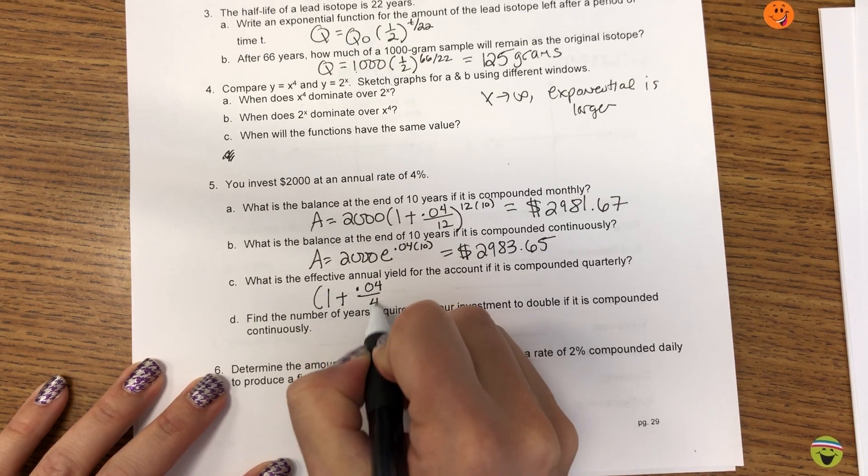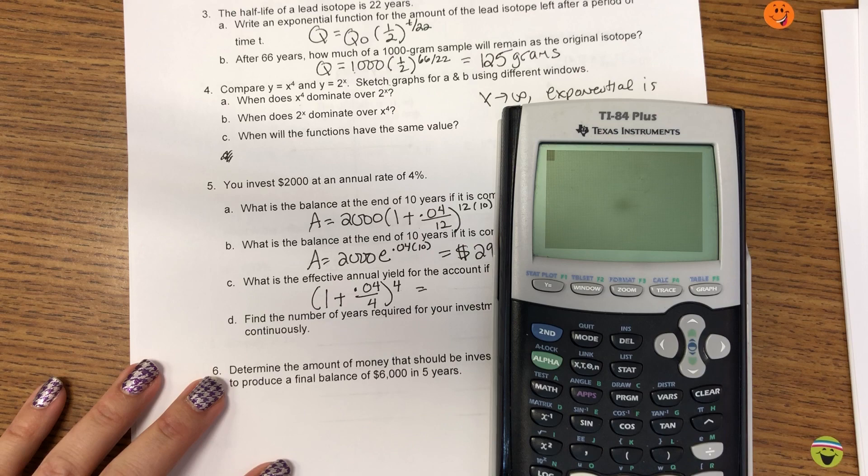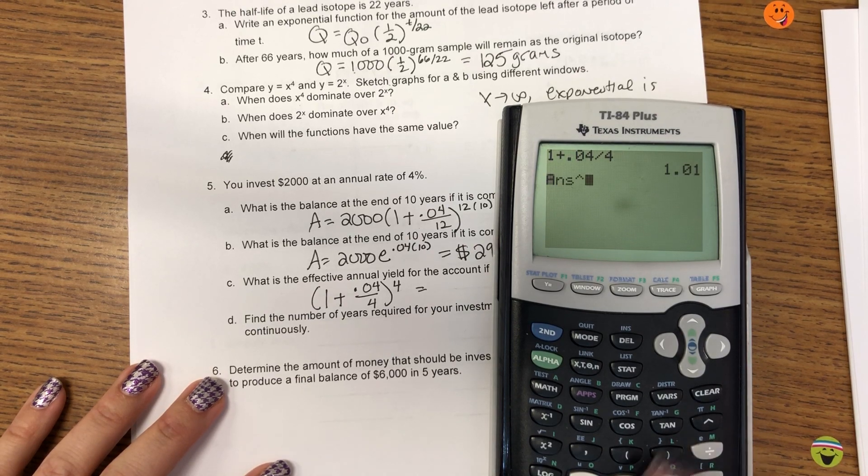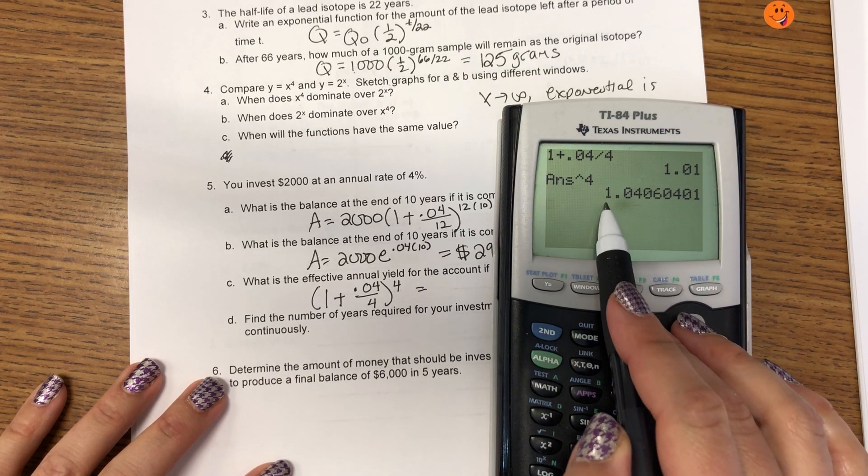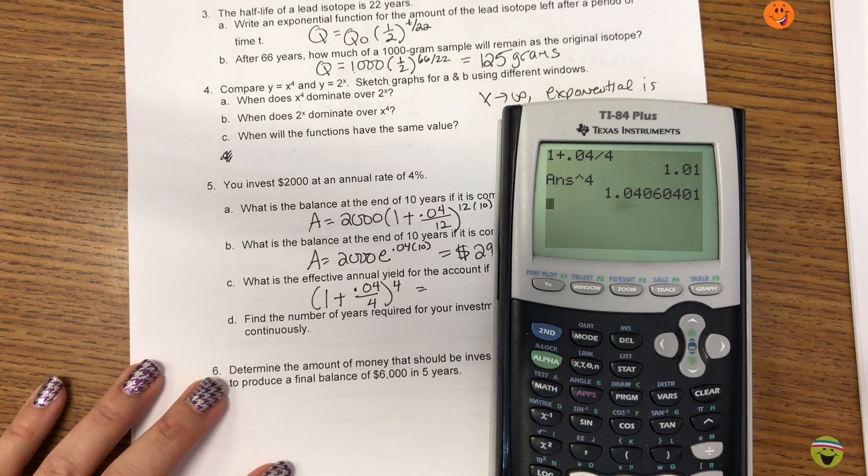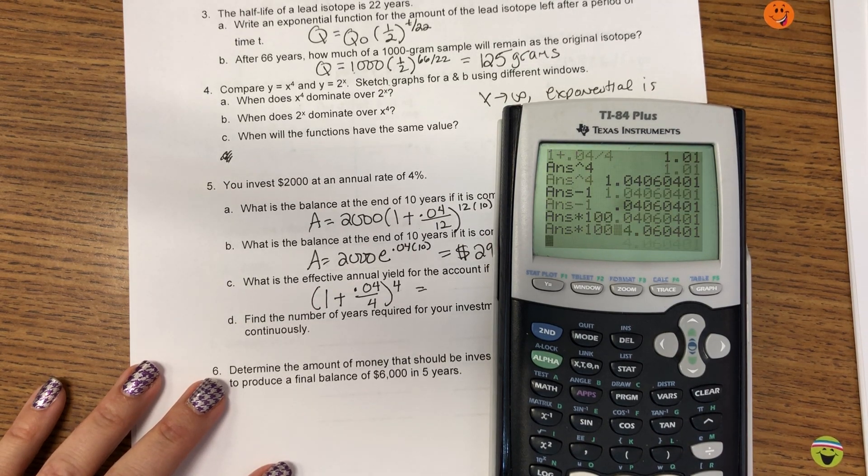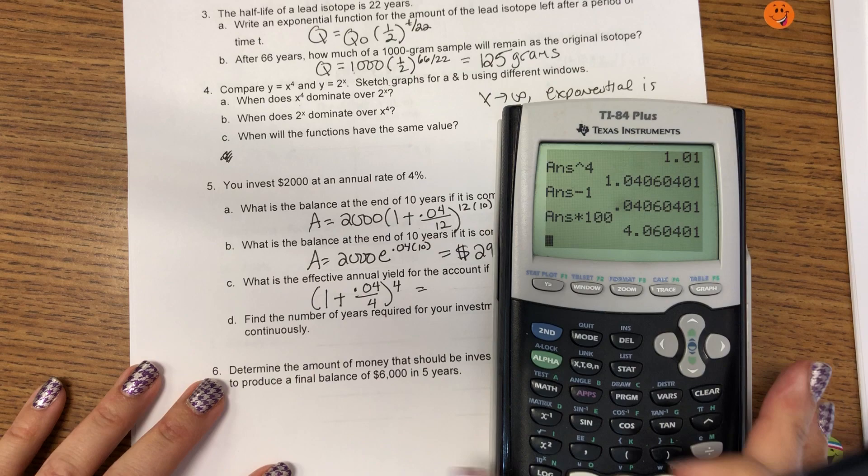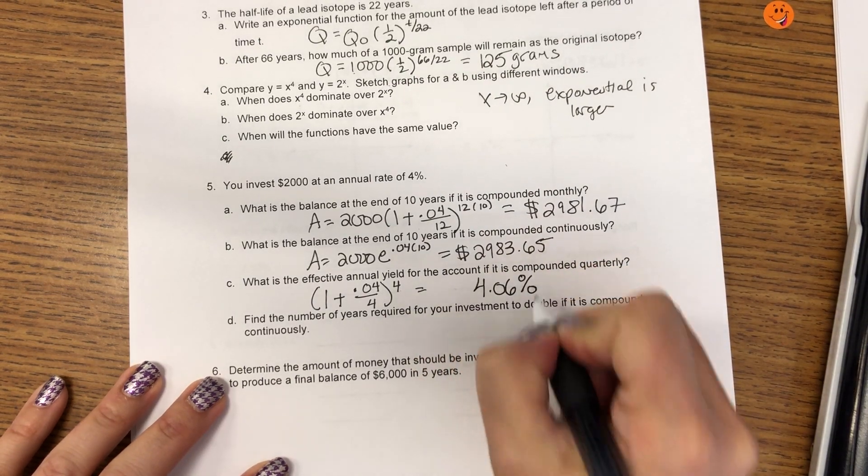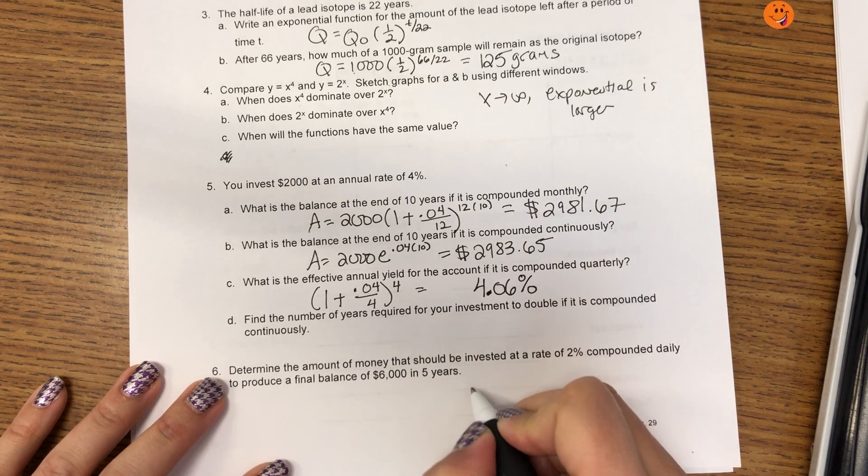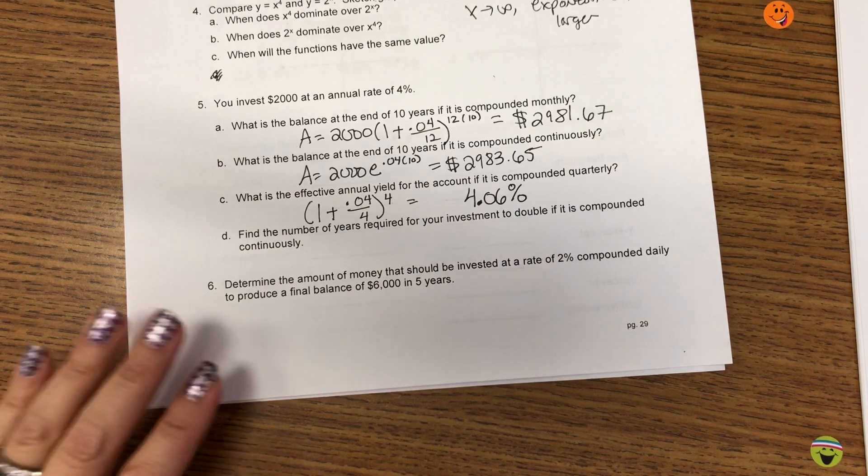Effective annual yield only uses the base part of the compound interest formula, quarterly. So, when we calculate that, I want a percent, but 1.04 is more than 100%. So, what we do is we take away the one and change that decimal to a percent.